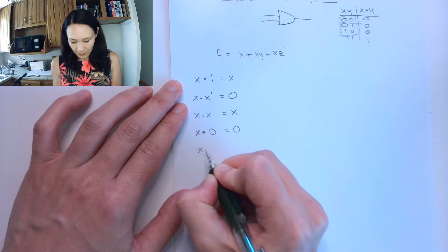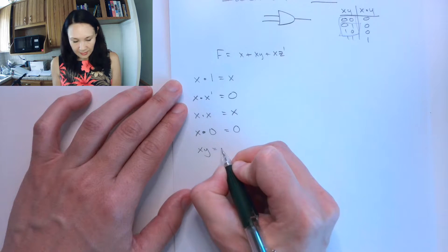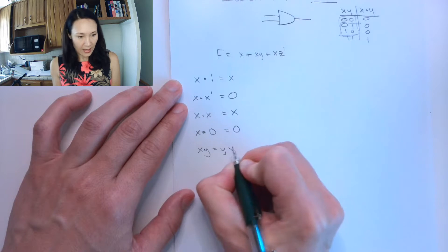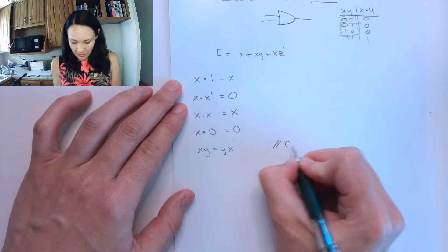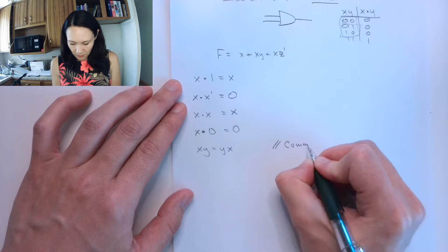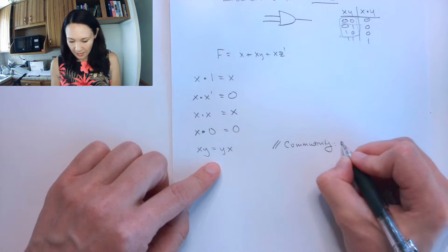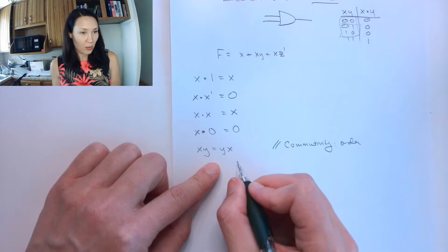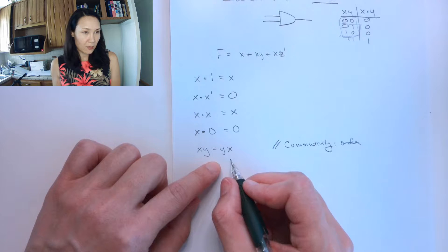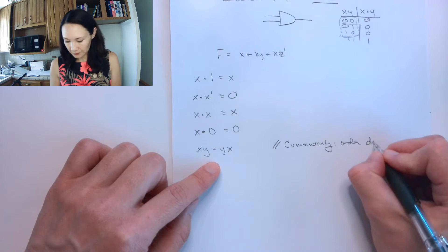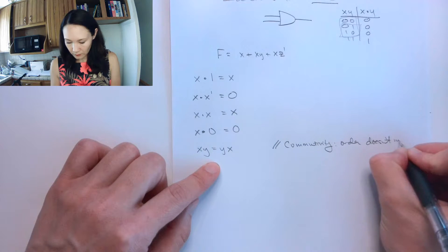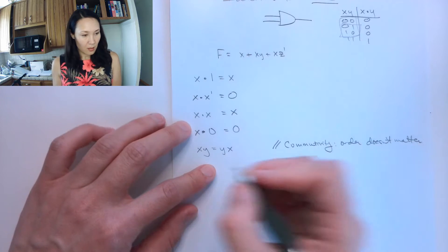Next we have that x, y is equivalent to y, x. And this is commutivity. It basically means that the order in which we AND these elements, these literals, doesn't matter.